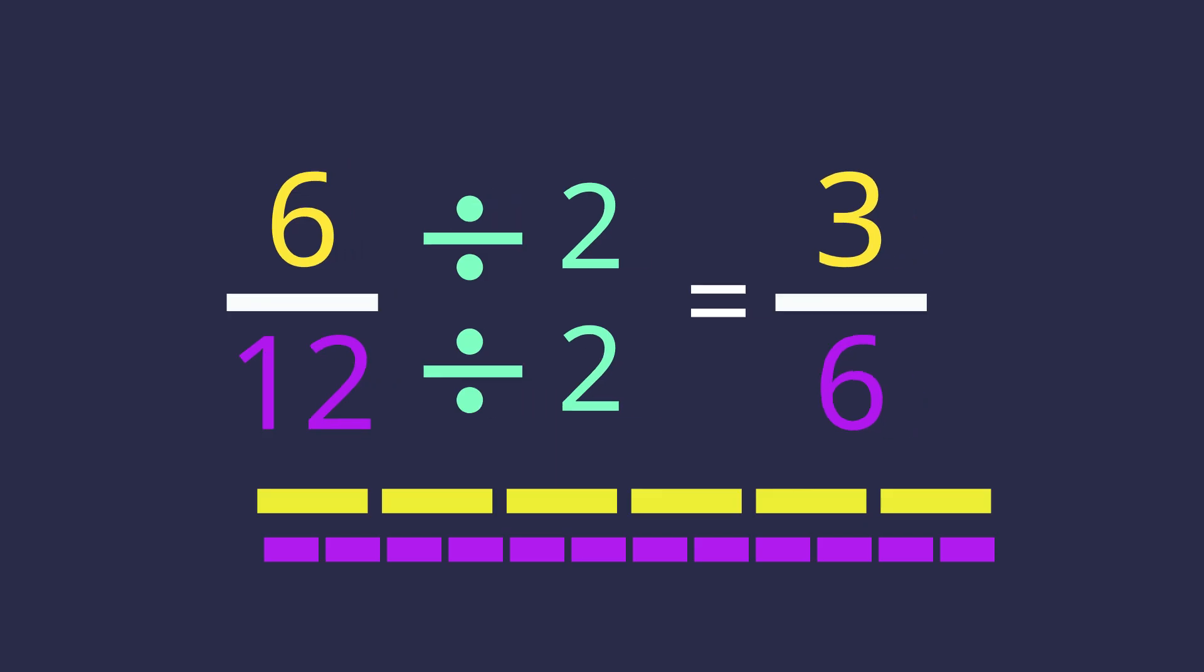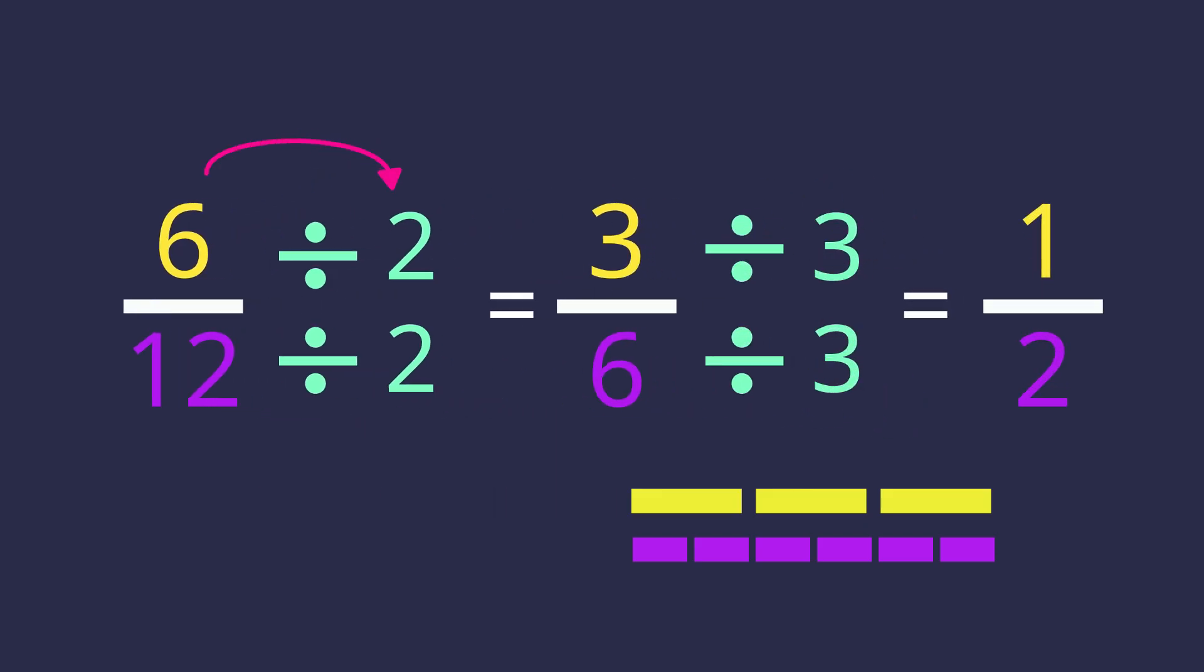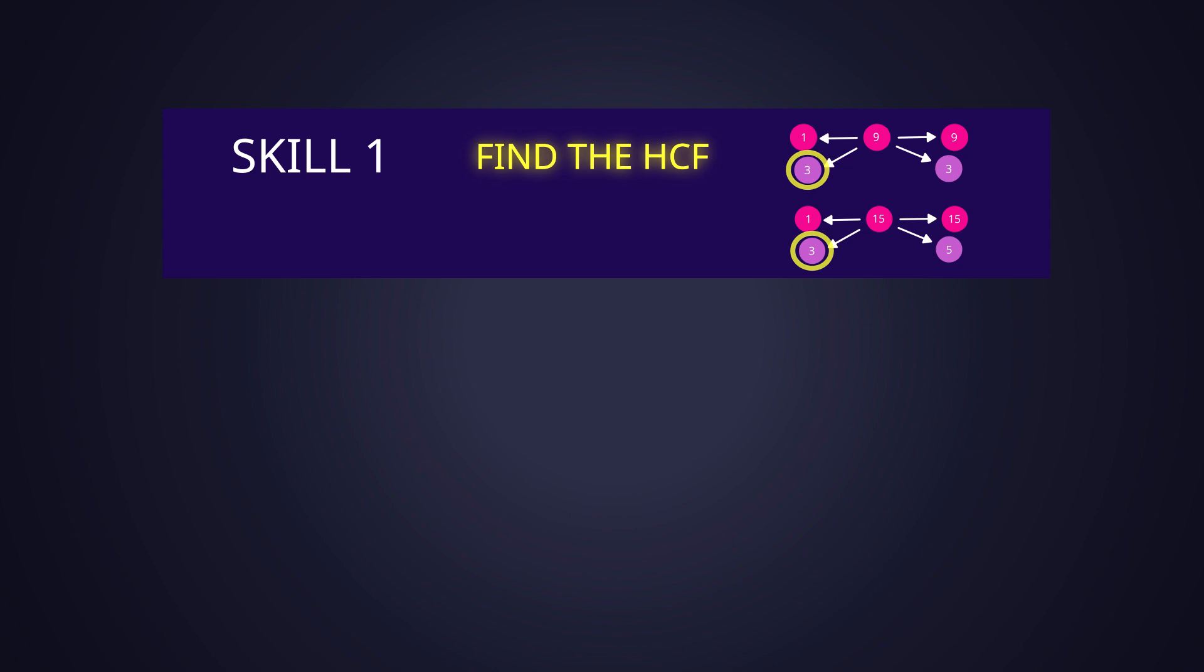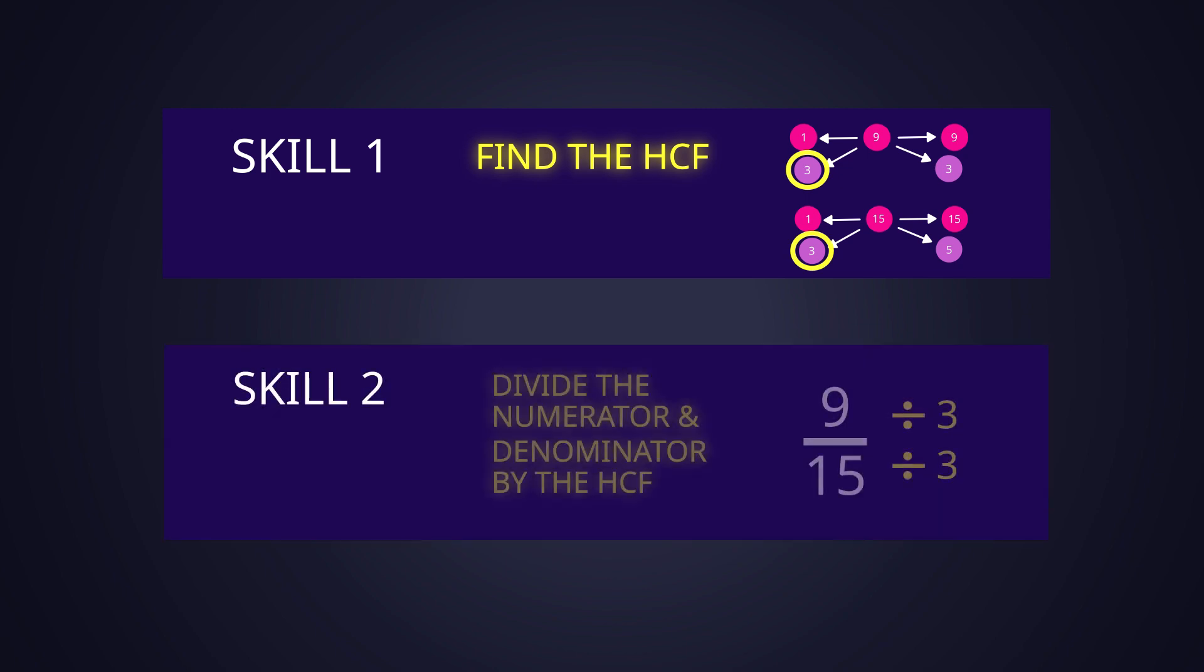Remember, simplifying fractions means turning the fraction into its smallest form. Recap the steps with me. Step 1: Identify the Highest Common Factors the numerator and denominator share. Step 2: Divide the numerator and denominator both by the Highest Common Factor.